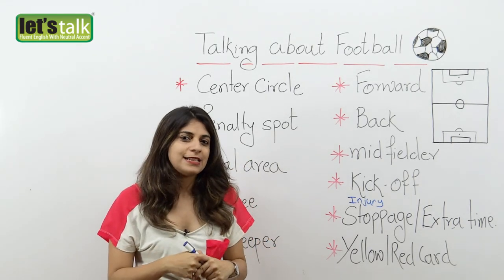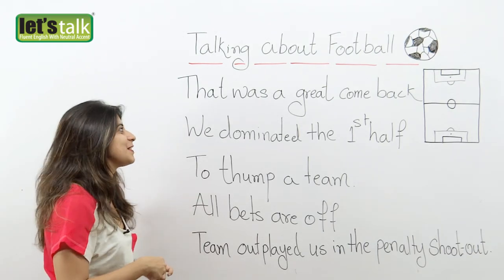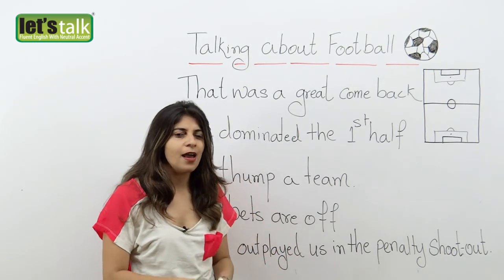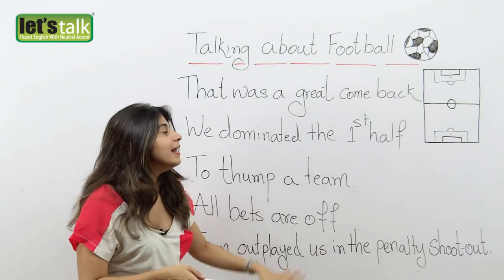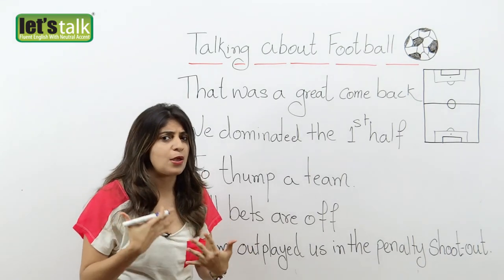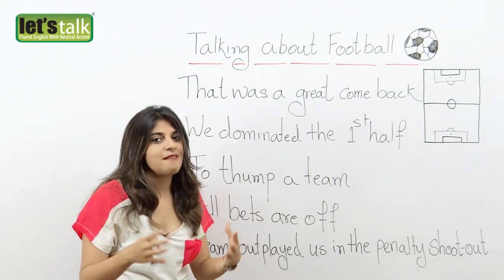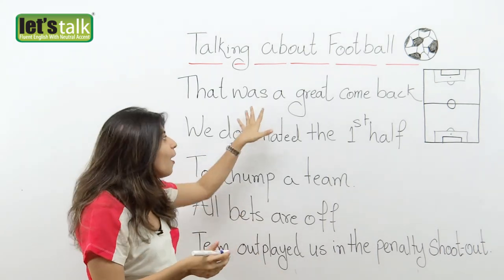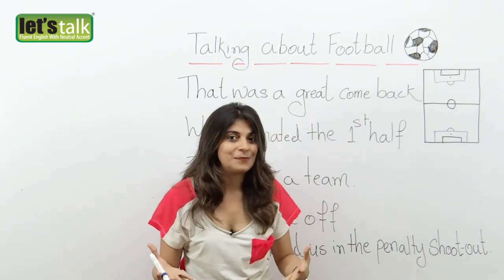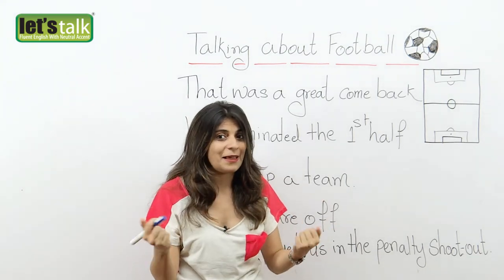Now let's look at some phrases to help you talk about and discuss the game. The first phrase is: 'That was a great comeback.' Maybe you are discussing a game with your friends and you say, 'Oh, that was a great comeback.' This means the team was losing and perhaps not playing very well, but with some new efforts to win, they succeeded and won the game. So you can say that was a great comeback for the team.